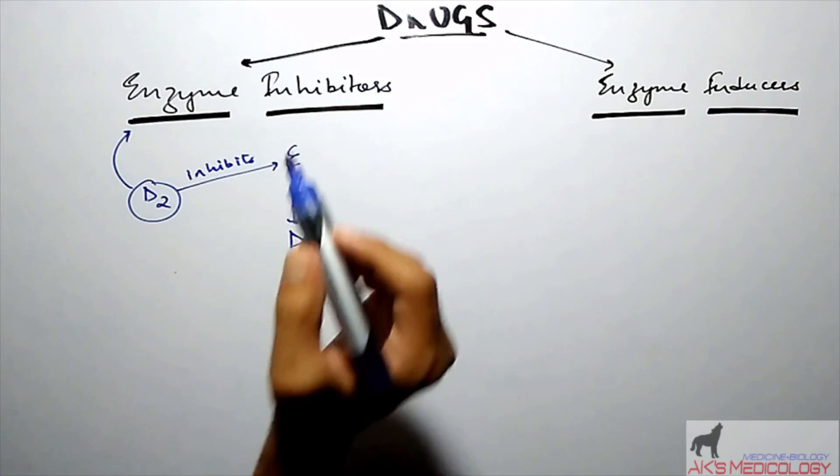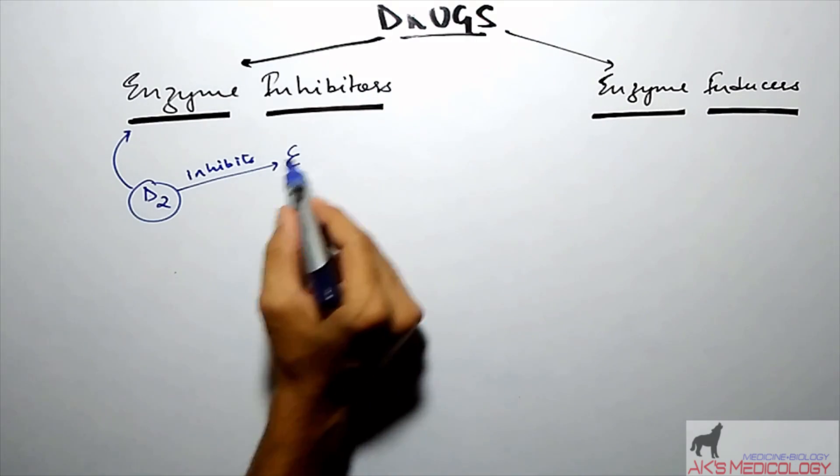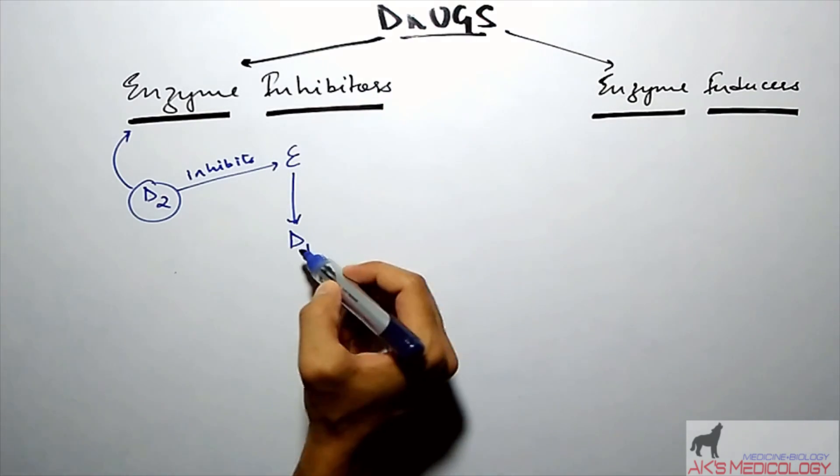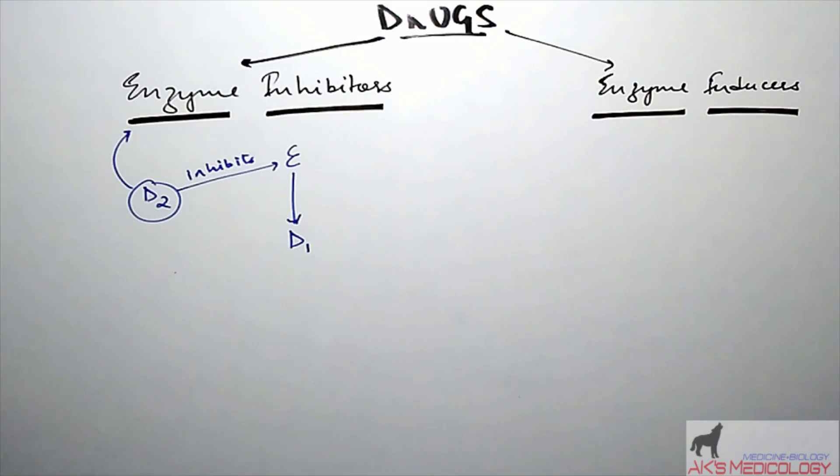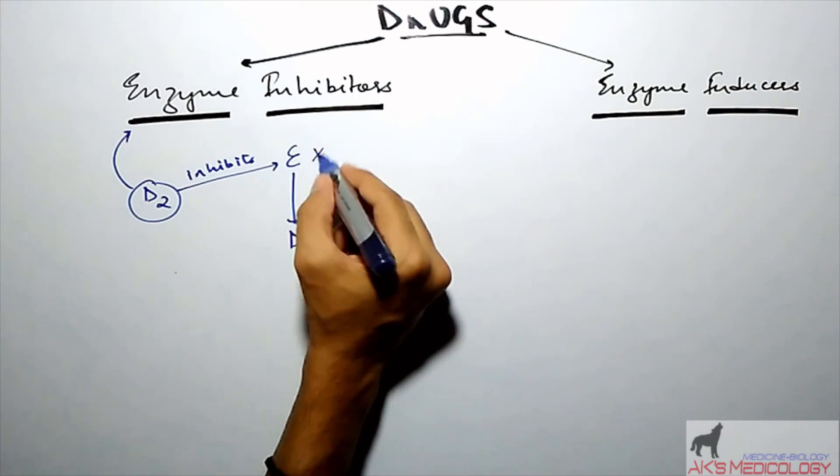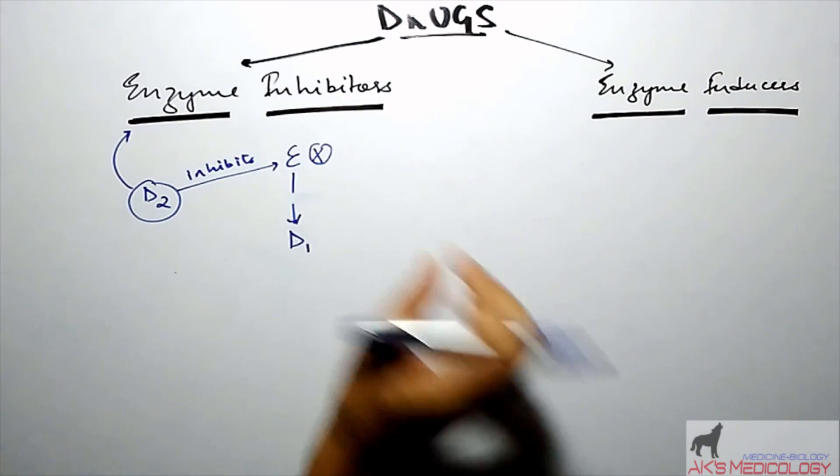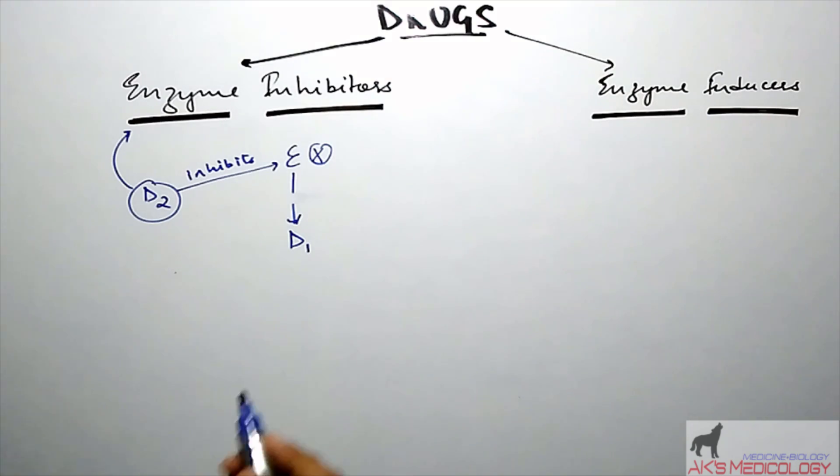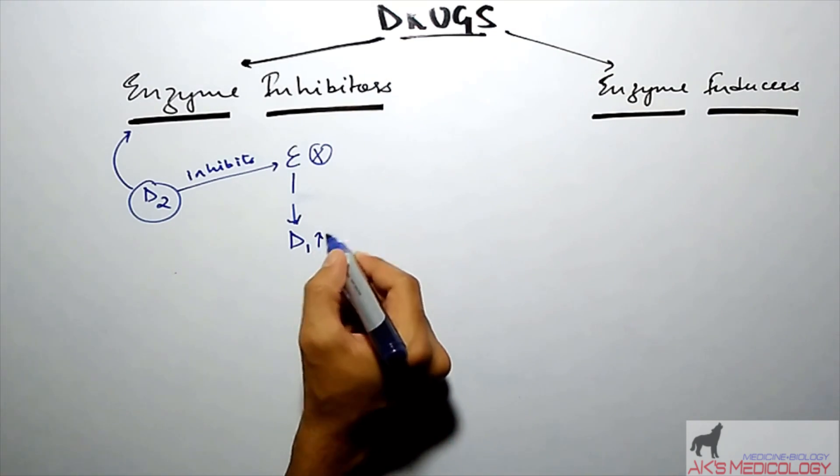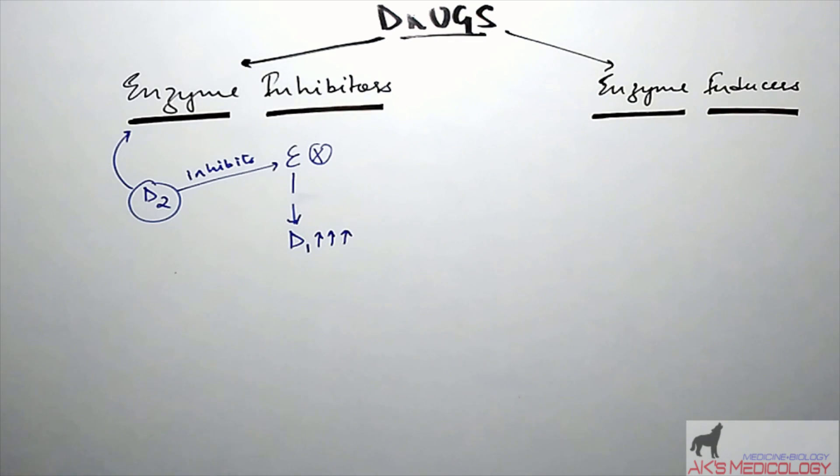The drug D2 is an enzyme inhibitor which inhibits the enzyme E that was metabolizing the drug D1. So if E is inhibited, the drug D1 would not be metabolized, and as a result the concentration of drug D1 would increase in the body, leading to adverse effects related to the toxicity of drug D1.